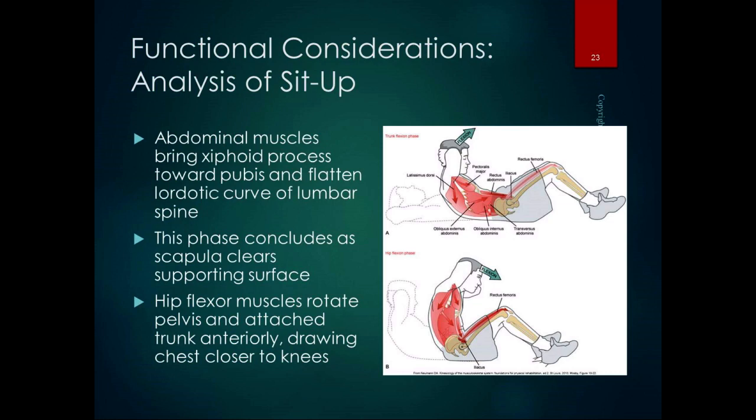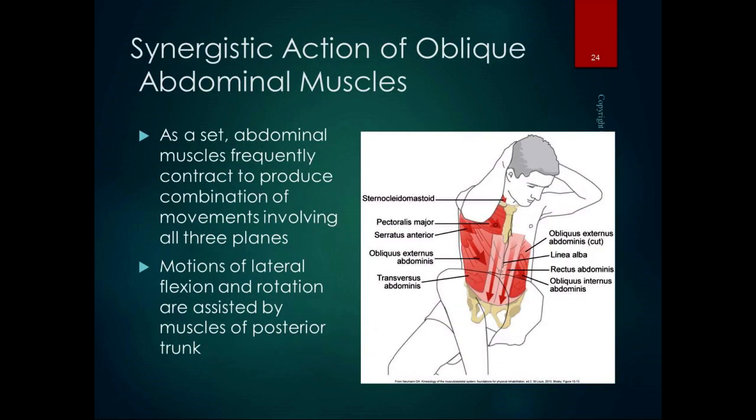In analyzing a sit-up: the abdominal muscles bring the xiphoid process toward the pubis and flatten the lordotic curve of the lumbar spine — this is the curl phase, which concludes as the scapula clears the supporting surface. Once you move into a full sit-up, the hip flexor muscles rotate the pelvis and draw the trunk anteriorly, bringing the chest closer to the knees. That's why during a fitness test someone holds your feet — so the hip flexors draw the chest toward the knees rather than lifting the feet.